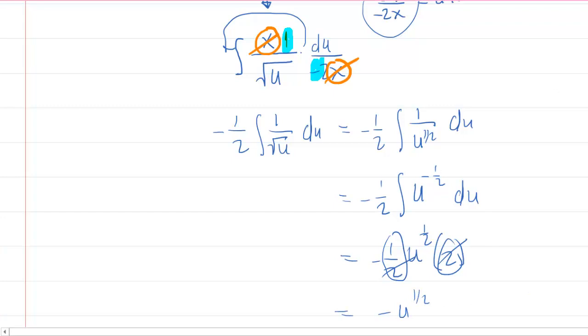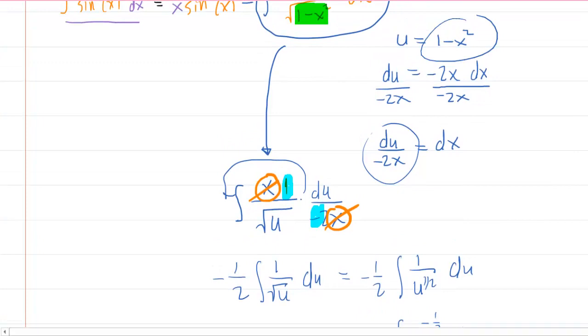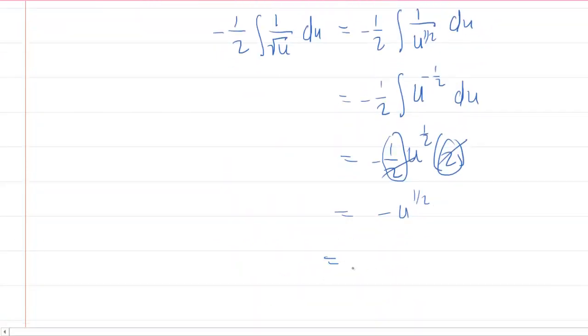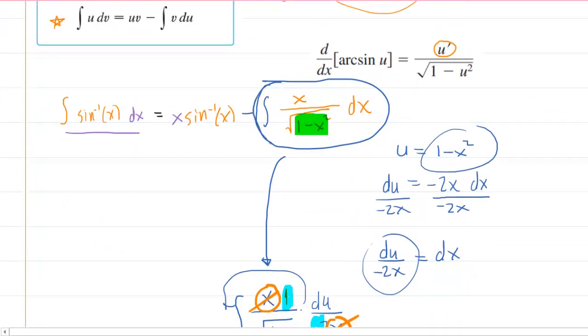But recall, u, way back here, was 1 minus x squared. So you have negative parentheses, 1 minus x squared to the half. So that's not the answer to the question. That is the answer to this integral right here.